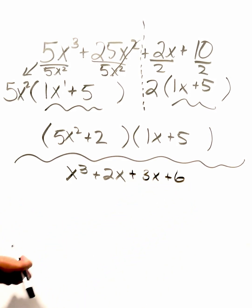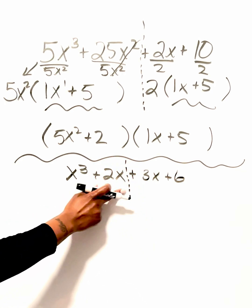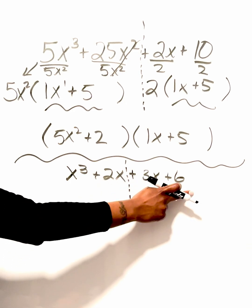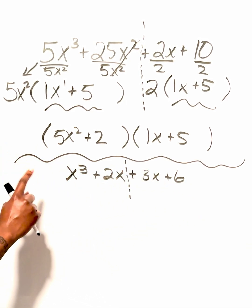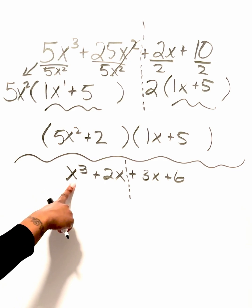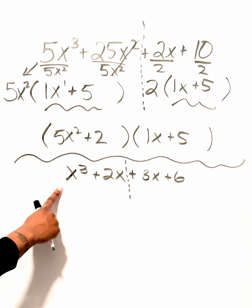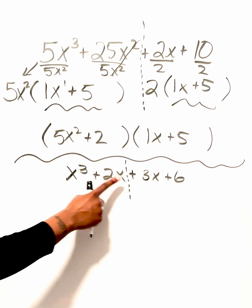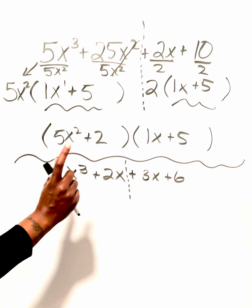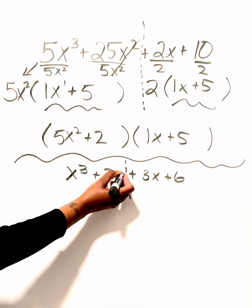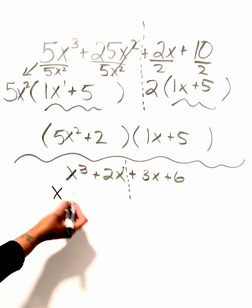When factoring by grouping: split in half, factor your first set, factor your second set. Always check for letters and numbers. On the left side we just have variables with no numerical coefficient, so I can only factor out the variables. We always factor out based on the smallest exponent — if you don't see a coefficient, you can put a 1 there as a placeholder.